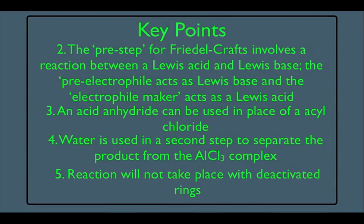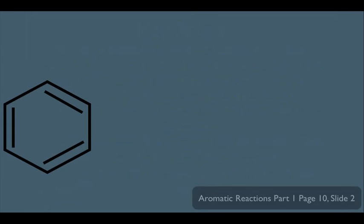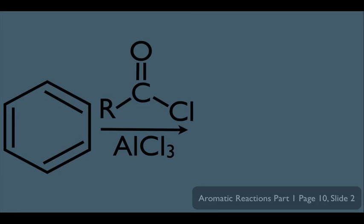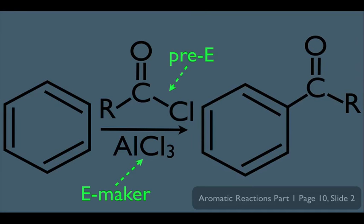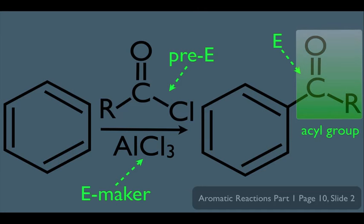The reaction starts with a benzene ring, an acyl chloride, and AlCl3. The acyl chloride is the pre-electrophile, AlCl3 is the electrophile maker, and together they generate the electrophile. The acyl group — the group in the shaded box — is why this reaction is called Friedel-Crafts acylation. The molecule reacting is called an acyl chloride, and acyl chlorides are the most popular reagents in Friedel-Crafts acylation.